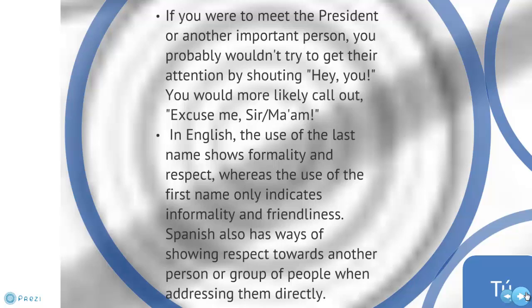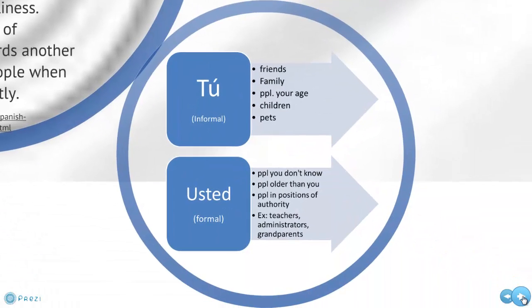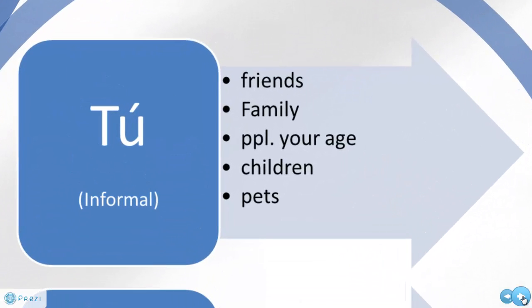In Spanish, there are also two ways of showing respect towards another person or group of people when addressing them directly. They are tú and usted. Tú is the informal way of addressing someone. You would use it when talking to friends, family, people your own age, children younger than you, or even with pets — you would address them informally.